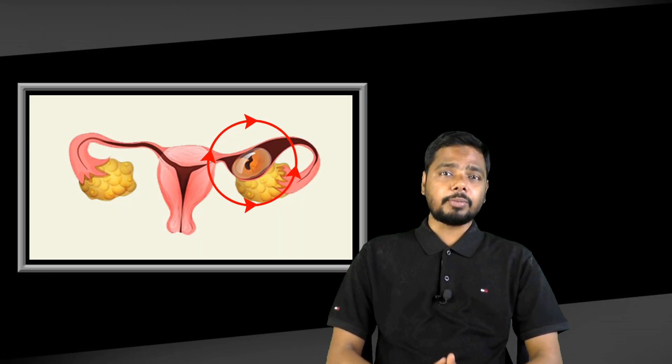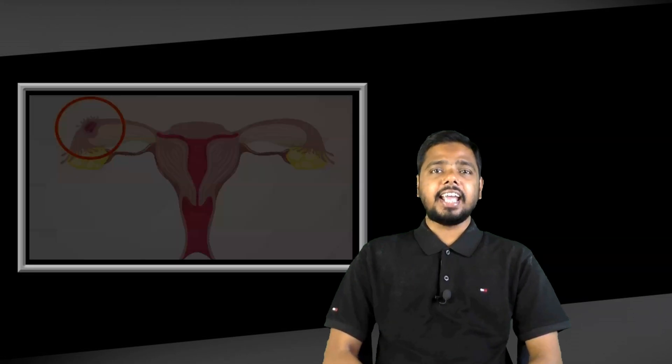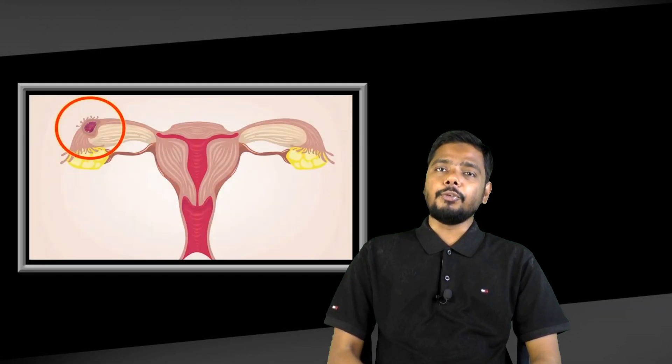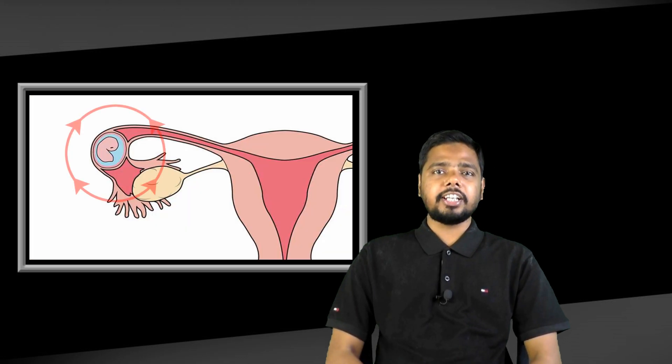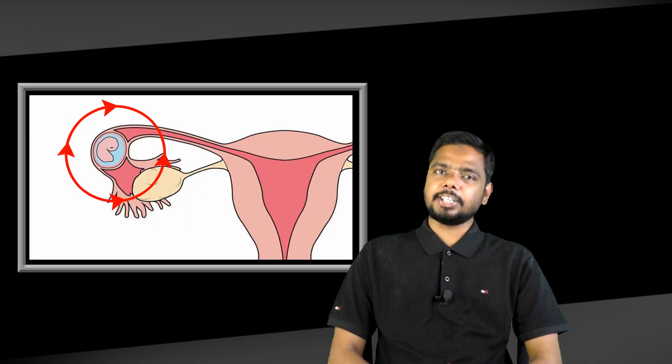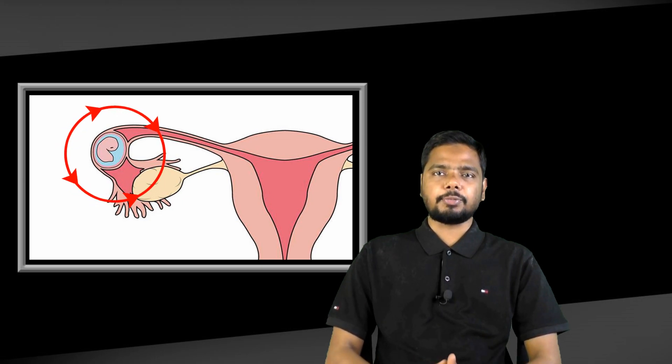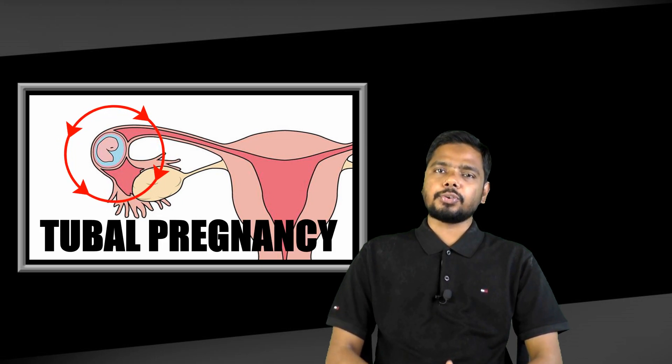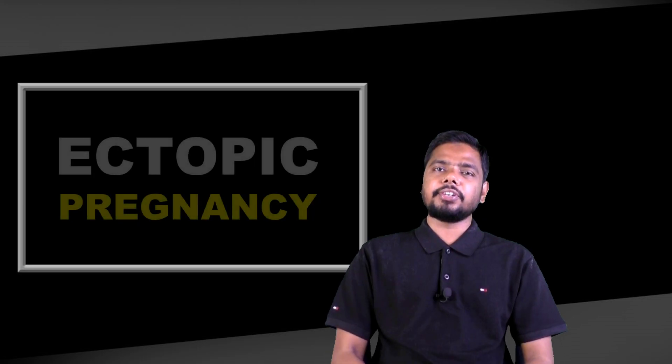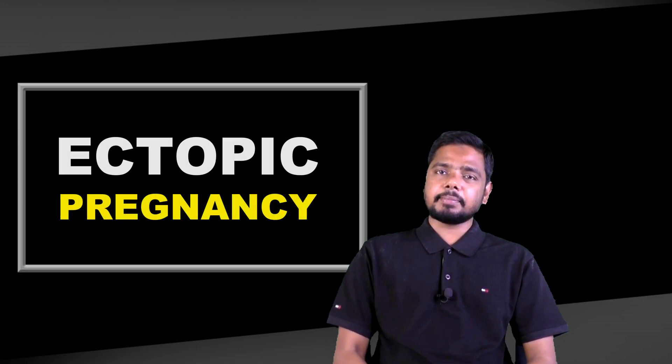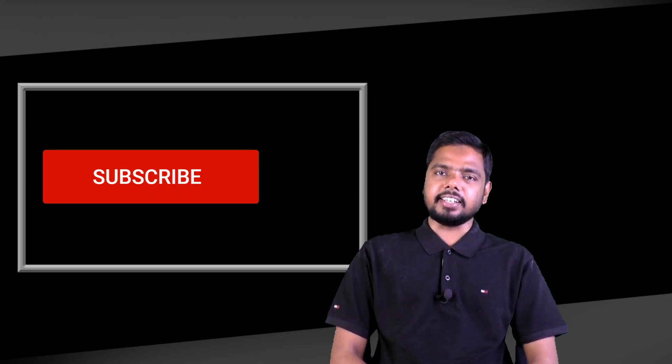Ectopic pregnancy is a very common problem for pregnant women. An ectopic pregnancy happens when a fertilized egg grows outside the uterus. Almost all ectopic pregnancies happen in the fallopian tube. It is a common pregnancy problem and this problem is also known as tubal pregnancy. Today in this video I will discuss the major symptoms of ectopic pregnancy.